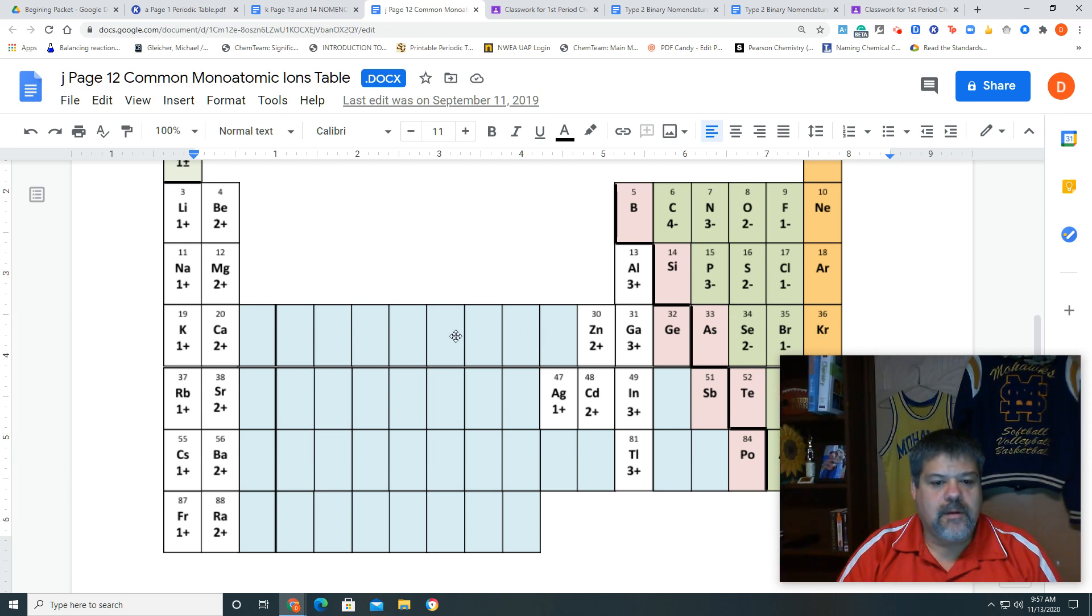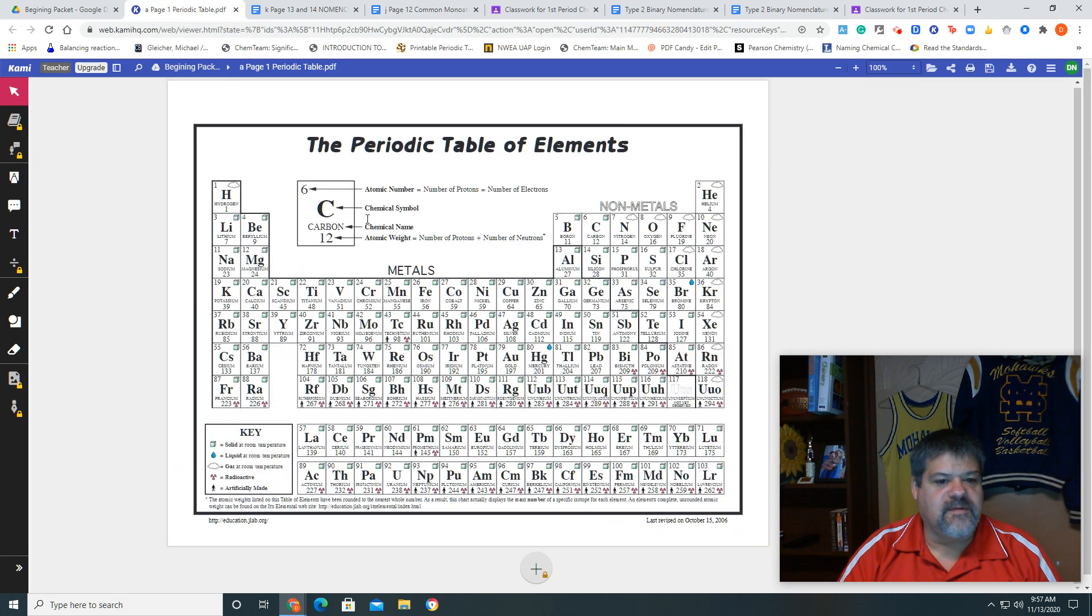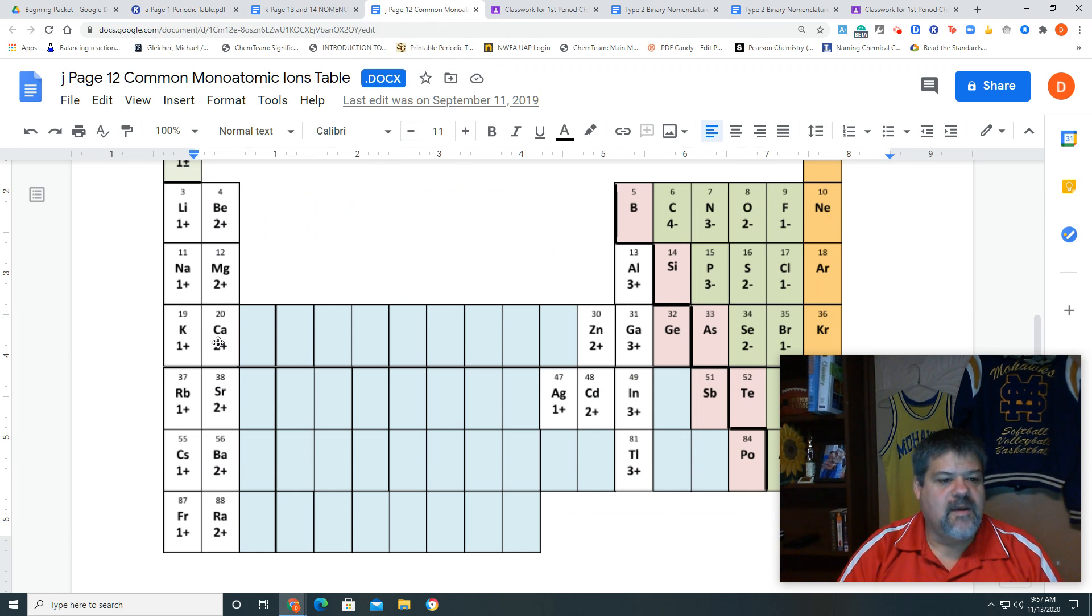But iron is over here. I can pull this up and say, iron is right there. So it's one, two, three, four, five over from that. It's right in the middle here, so there's iron.